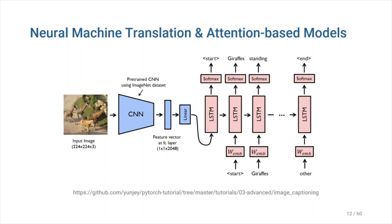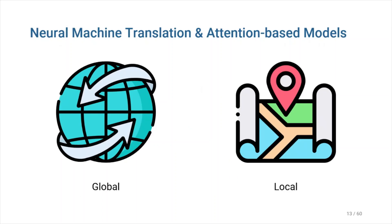The goal is to derive a context vector ct that captures relevant source-side information to help predict the current target word yt. An interesting fact about this architecture is that it can take any input representation and reduce it to a single fixed-length context vector to be used in the decoding step. As a result, it is possible to decouple the input representation from the output representation. This advantage could be used to implement hybrid encoder-decoders, the most common of which are CNNs as an encoder and RNN or LSTM as a decoder. Image and video captioning, visual question answering, and voice recognition are all examples of multi-modal activities where this architecture comes in handy. Attention-based models are split into two sections in this paper: global and local, differing in whether attention is given to all source positions versus only a few.